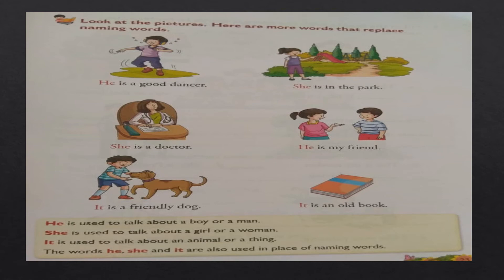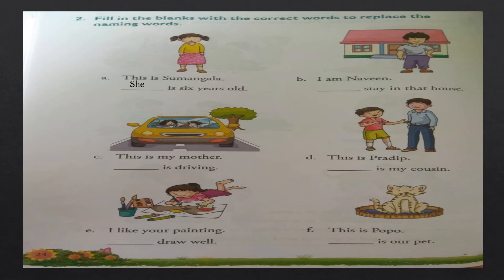Page number 24. Fill in the blanks with the correct words to replace the naming words. This is Sumangala. She is six years old. I am Naveen. I stay in that house. This is my mother. She is driving. This is Pradeep. He is my cousin. I like your painting. You draw well. This is Popo. It is our pet.